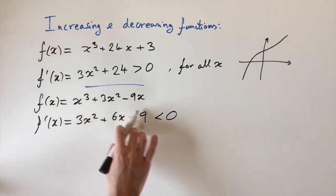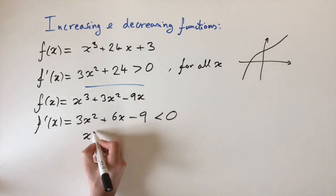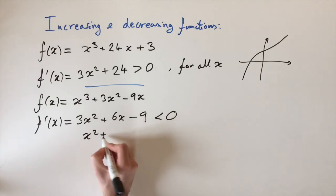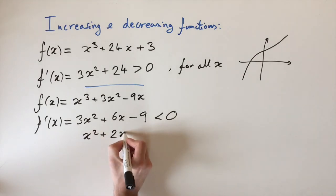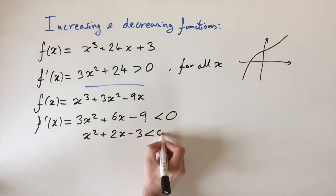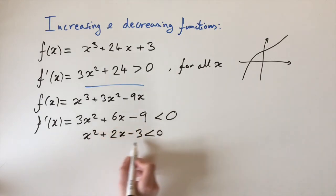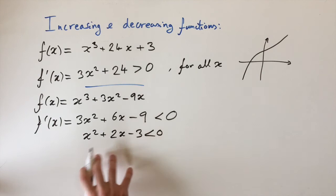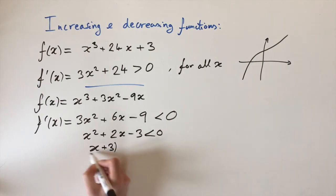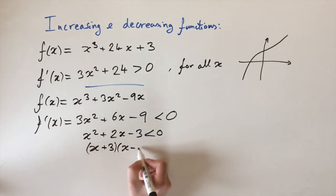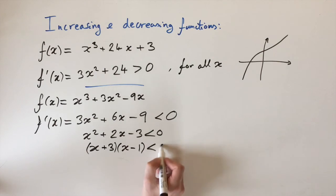So notice that all these terms are multiple of 3, so I can just start off by dividing by 3. This gives us x² + 2x - 3 is less than 0. And now this is a quadratic, and we can actually think about setting this equal to 0 and finding the critical points. So first I'm just going to factorize this quadratic, and this comes out as (x + 3)(x - 1). So this is less than 0.